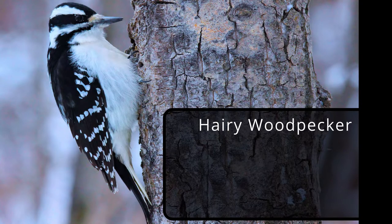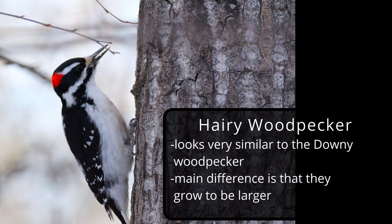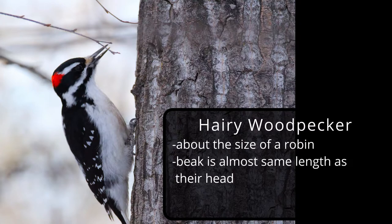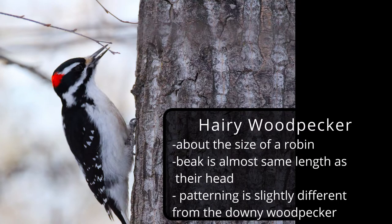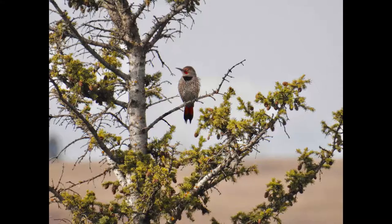The hairy woodpecker looks remarkably like the downy woodpecker, right? But they are noticeably larger, about the size of a robin, and their beak is almost the same length as their head. Similar to the downy woodpecker, only the males of this species have a red crest. There are more subtle differences in their patterning which you can learn to pick out with some practice too.